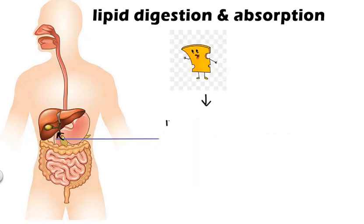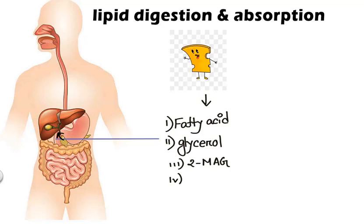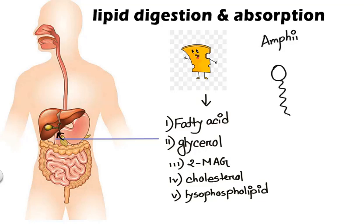Phospholipase A2 enzyme helps in this regard and their activity is enhanced by bile salt. So at the end of digestion this little cheese is converted into fatty acid, glycerol, two monoacylglycerol, cholesterol and lysophospholipid. These are converted to such so that they can be easily absorbed. All the end products are amphipathic lipids. That means they have both hydrophilic and hydrophobic ends.